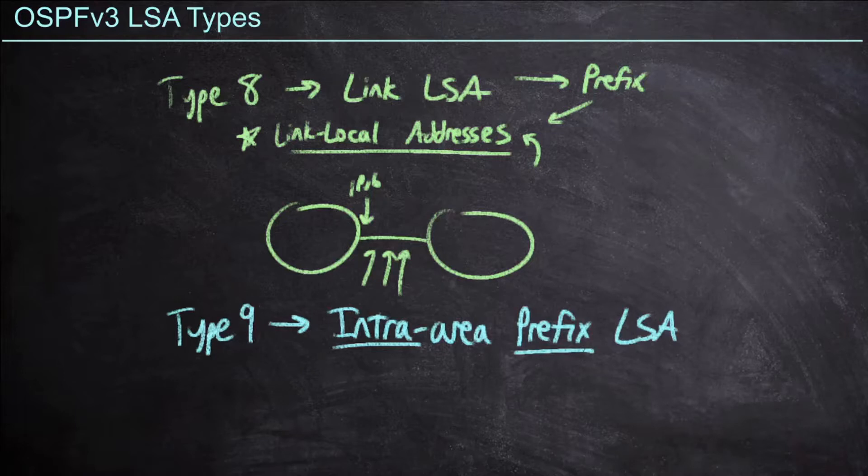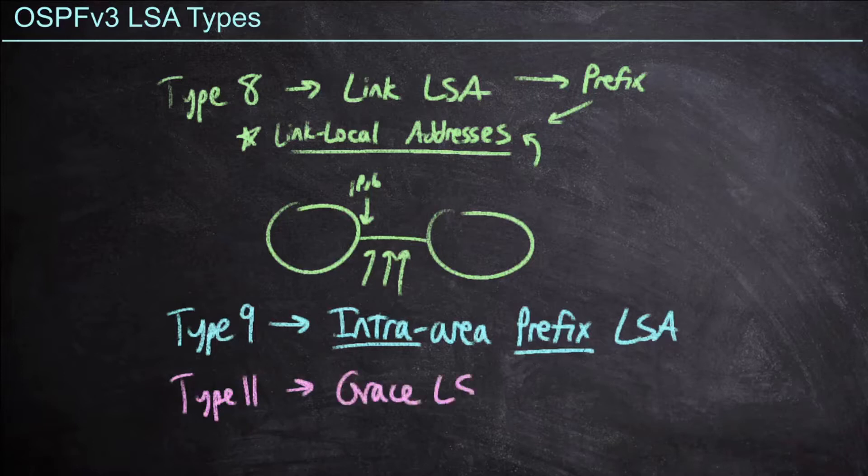Now last but not least, OSPF version 3, for whatever reason, skips over type 10, and we have a type 11 LSA. This type 11 is called a grace LSA, and it is used for graceful restart within OSPF version 3.